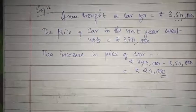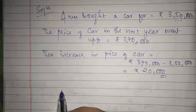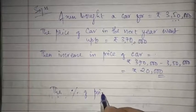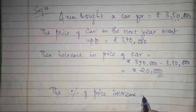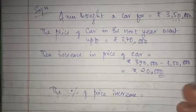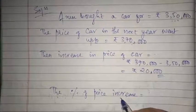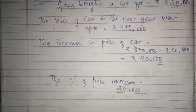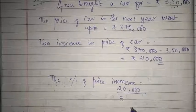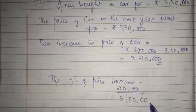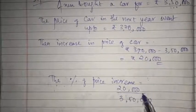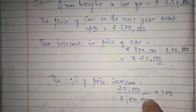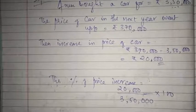Now this amount has to be converted into percentage. The percentage of price increase is equal to the increase in price — which is 20,000 — divided by the initial price, which is 3 lakh 50,000, into 100. To convert any number into percentage we multiply by 100.